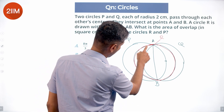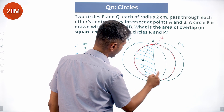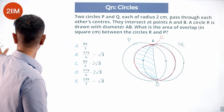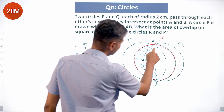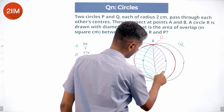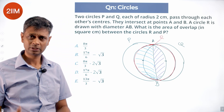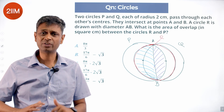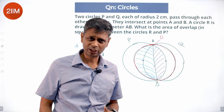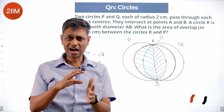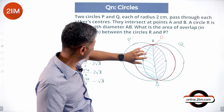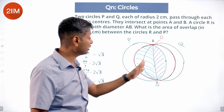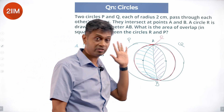The overlap consists of two parts. One part is this area — that is one half of R, a semicircle. The next part is this area, which is a segment of P. So the semicircle of R sits inside P, and this segment of P sits inside R.